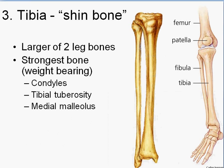Next up is the tibia, known as the shin bone — this big one right here. That is the weight-bearing bone. The fibula is here on the outside; this would be the right leg. The fibula does not bear any weight. The tibial tuberosity is just a bump on the front which connects the patellar tendon. And down here on the bottom is the medial malleolus, on the inside — a pretty big bump that sticks out down around your ankle.